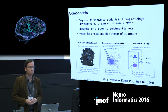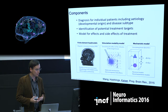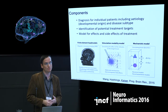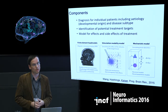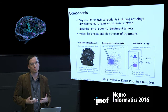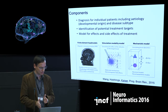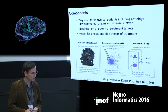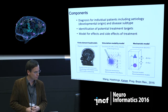So what do we need to reach that goal? First, we need a diagnosis for individual patients that includes etiology — the developmental origin — and disease subtypes. We need to understand what went wrong in the past to understand the underlying cause and how to treat it. We also need to identify potential treatment targets, which parts of the brain to treat, and we need models for the effects and side effects of treatments.